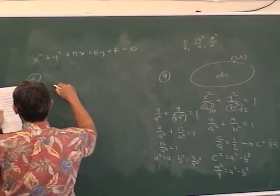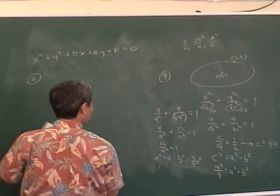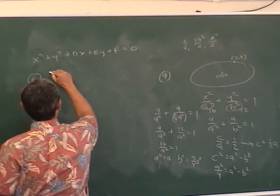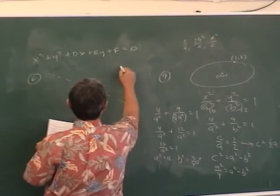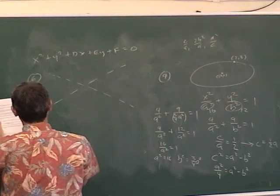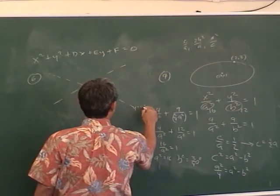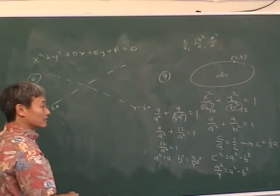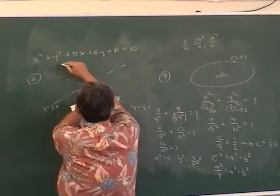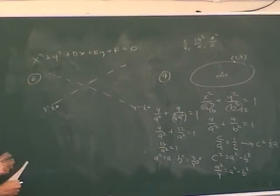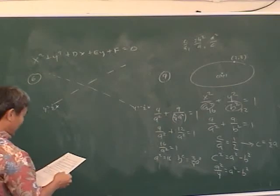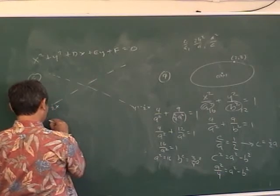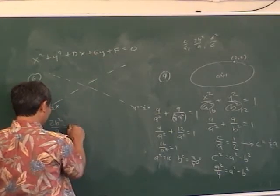Number six — write the equations of the hyperbolas. That means there's more than one answer — if you only give one you get half credit. The asymptotes are y equals ±(1/2)x. There are two answers because you can have a left-right hyperbola or an up-and-down hyperbola. The length of the latus rectum equals 16, so write 2b²/a equals 16.